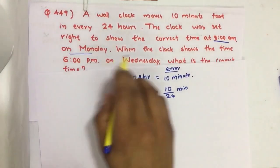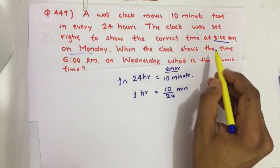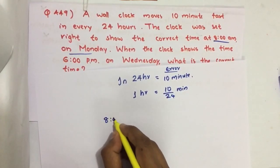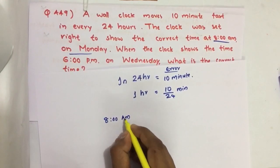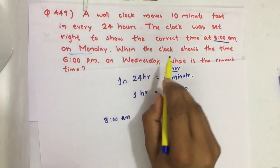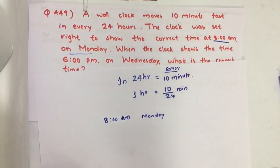Now in the next statement it is given that at 8 a.m. on Monday, correct time is set on the clock.